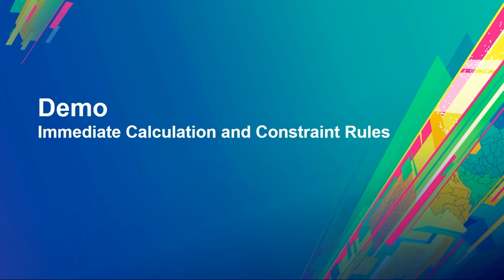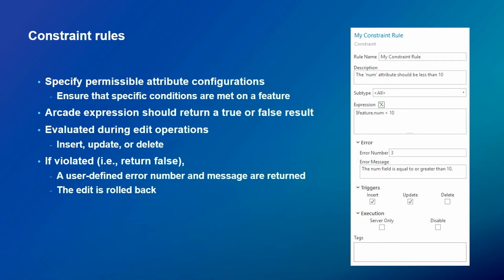A question was raised: if you're doing an insert operation with two, three, or four records, does the rule execute when you apply those edits or when you create a new row? The answer is for each individual insert, we trigger these rules. If a constraint rule is violated, we block the insert before the next record is created. So it's per individual edit operation, which could be heavy in certain situations.